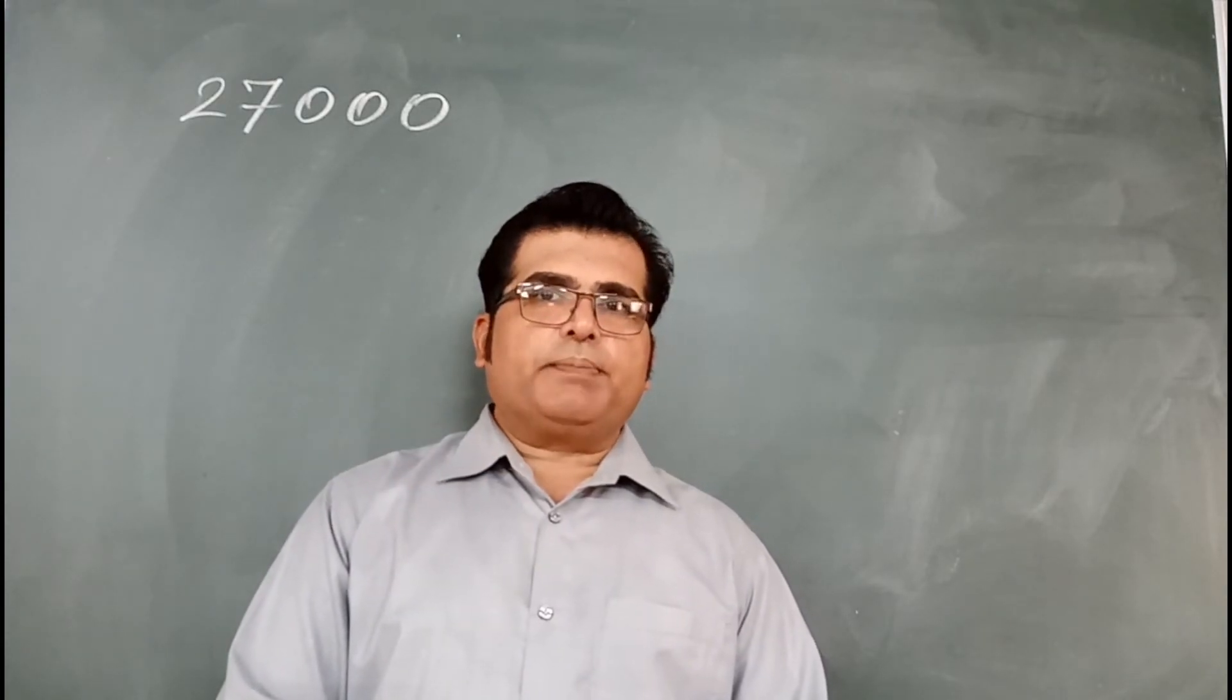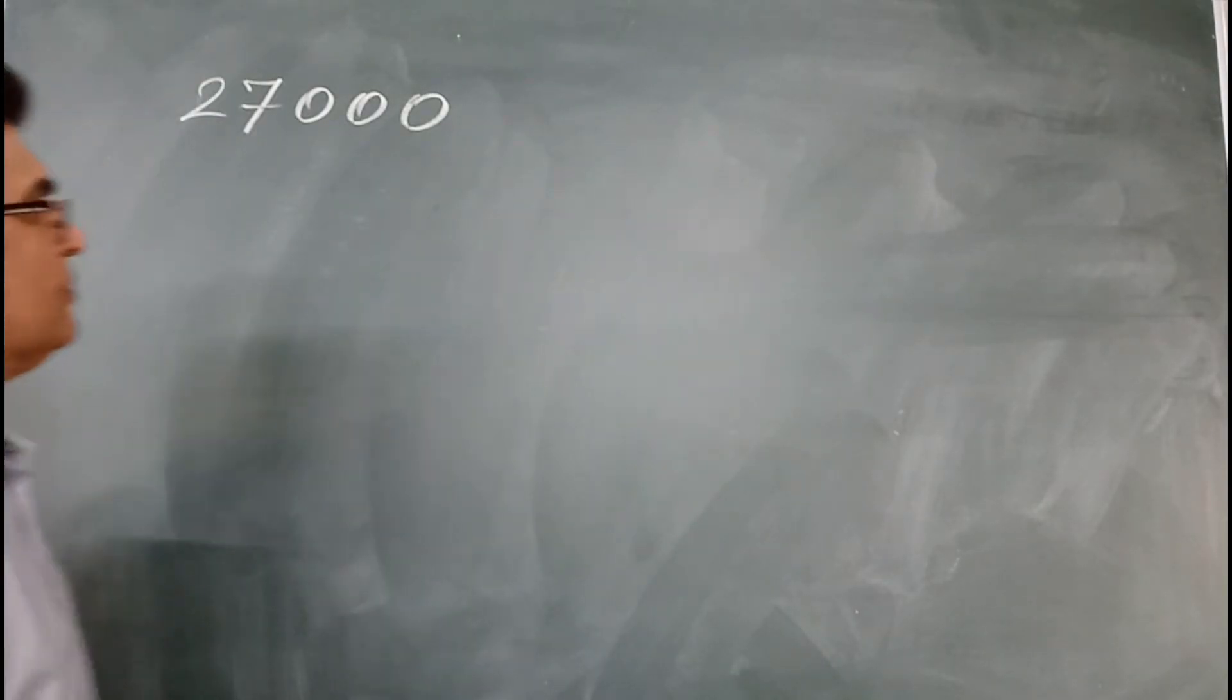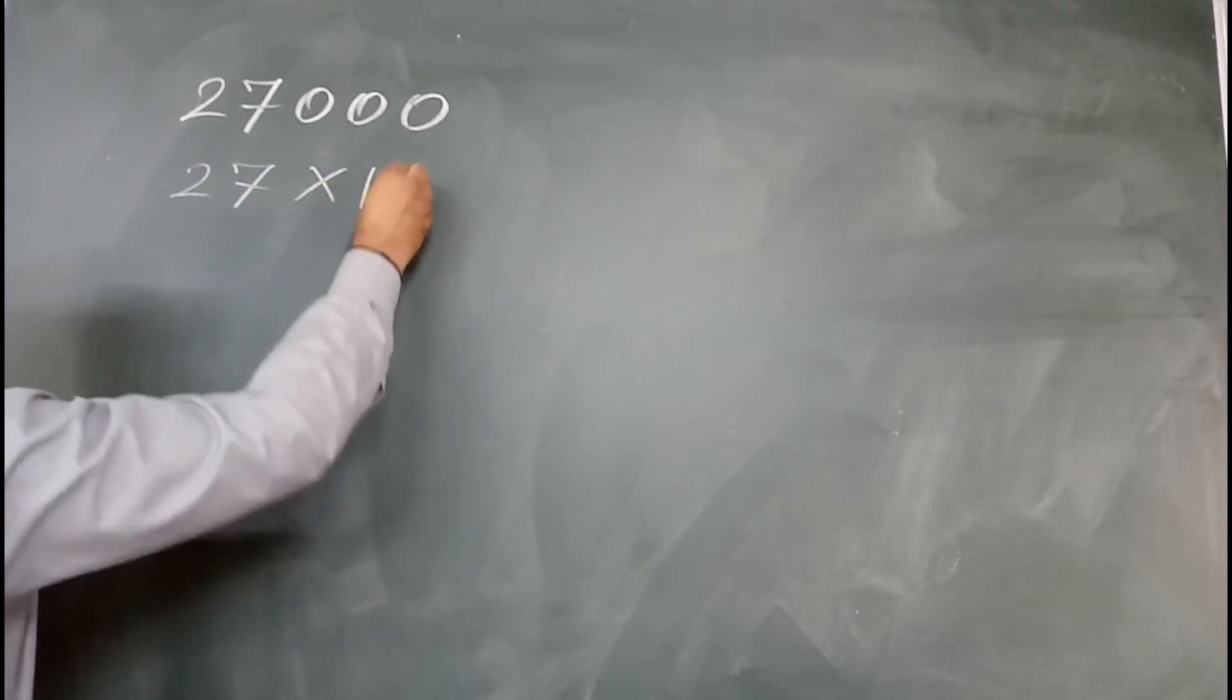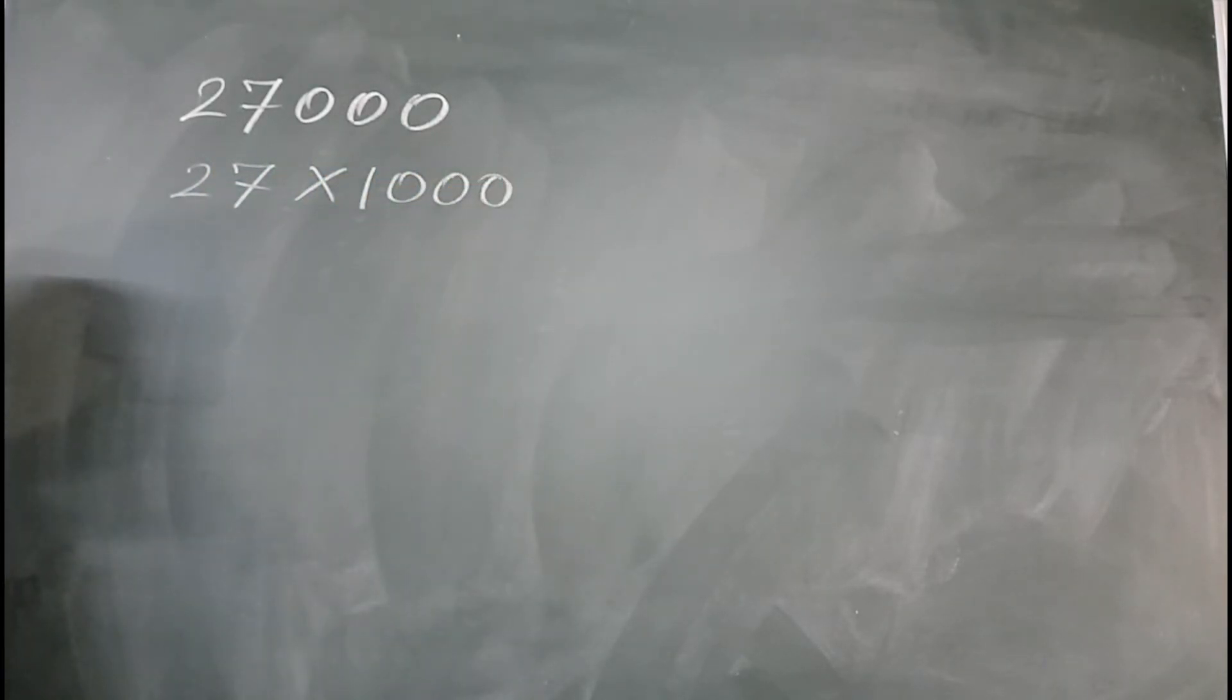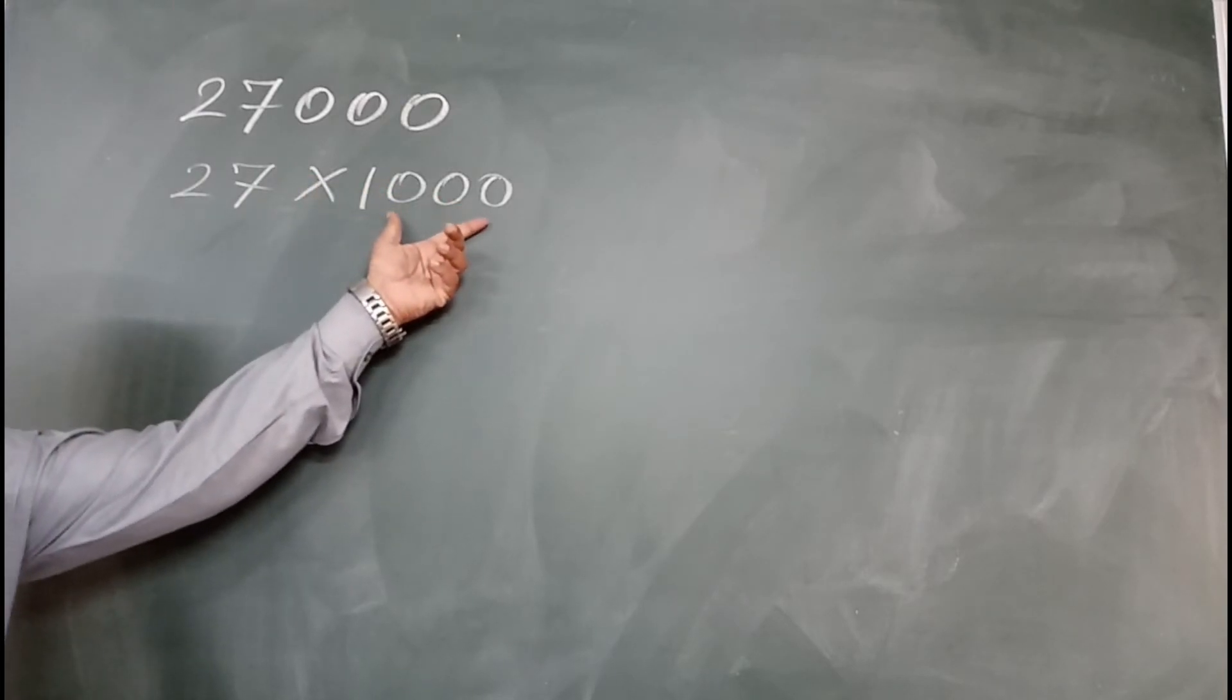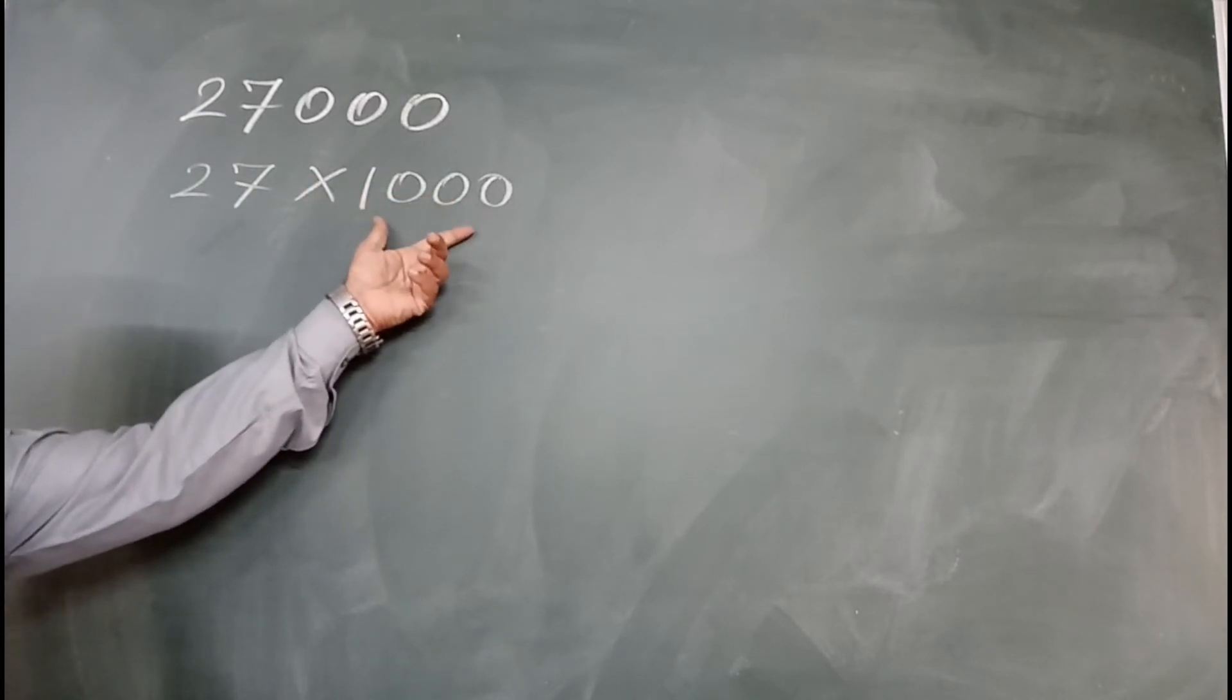You break the number into two parts: 27 times 1000. Then first find the prime factors of 27, then find the cube root of 1000.